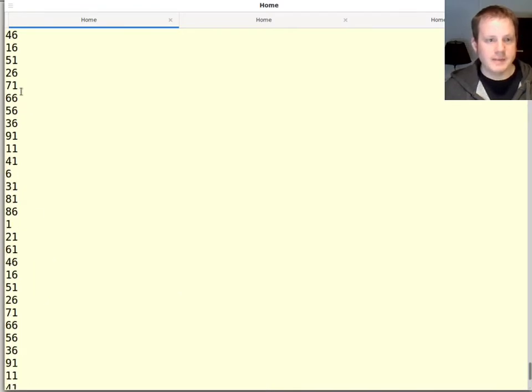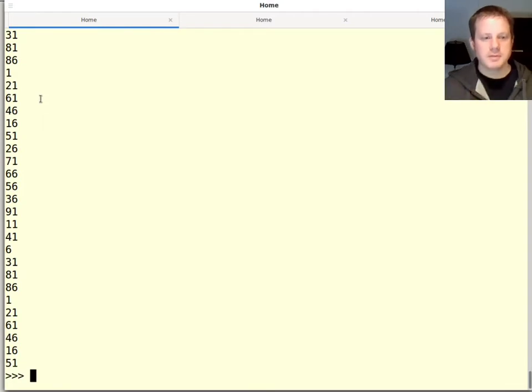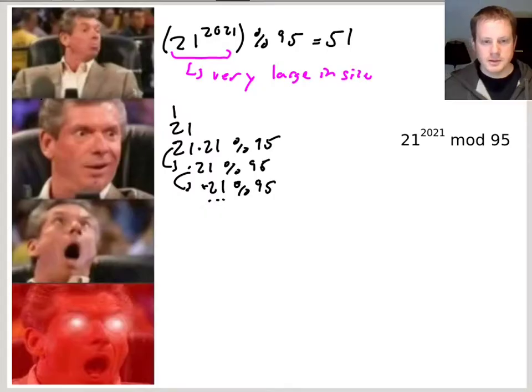But now, instead of having to have this gigantic number that we work with, we just have to do a lot of computations with small numbers. It turns out that the total size of all those small numbers equals the size of that one big number. But by computing with only small numbers, it's much more efficient. So this is a little bit better.